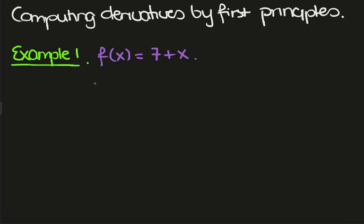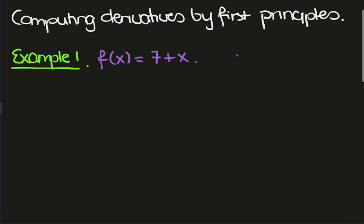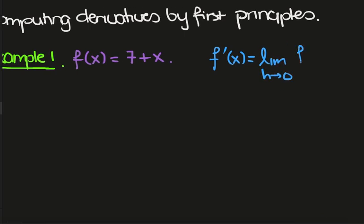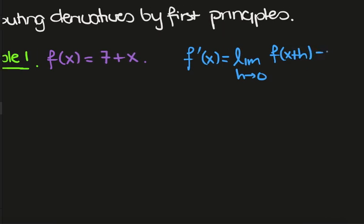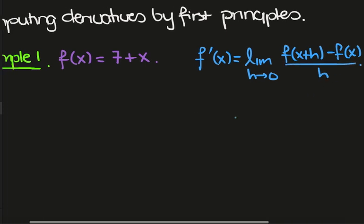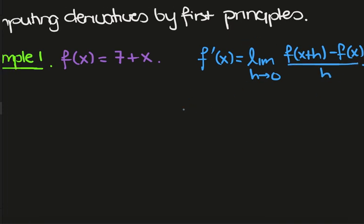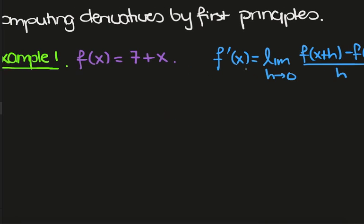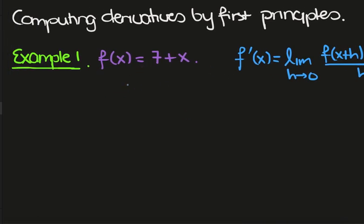In this video we want to look at computing derivatives by first principles. This means we want to use the formula for the derivative given by the limit as h tends towards zero of f of x plus h minus f of x, all divided by h. This is the formal definition of the derivative, so let's apply that to this example where we have f of x equals 7 plus x.